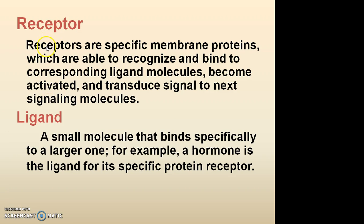Receptors are specific membrane proteins which are able to recognize and bind to a corresponding ligand molecule, become activated, and transduce a signal to the next signaling molecule. Whereas a ligand is a small molecule that binds specifically to a larger one — for example, a hormone is a ligand for its specific protein receptor.